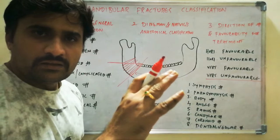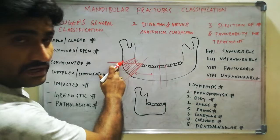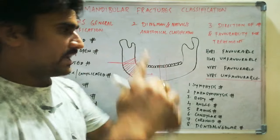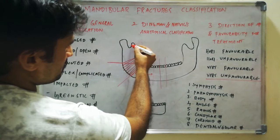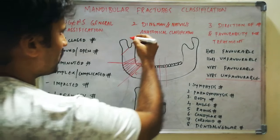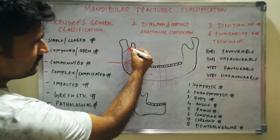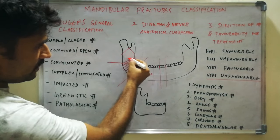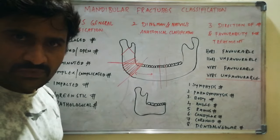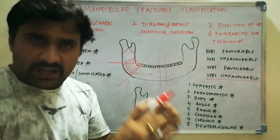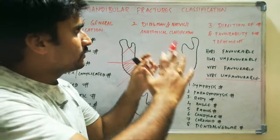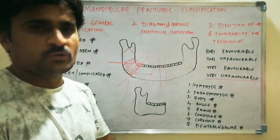The mandibular ramus extends from the posterior border of the angle to two lines connecting with their apex at the sigmoid notch. This area between these two lines, with the apex at the sigmoid notch, is called the mandibular ramus. After this, there is the mandibular condyle and the coronoid process, and fractures are classified according to which area the fracture line runs through. This is the most commonly used classification and must be written in the exam.